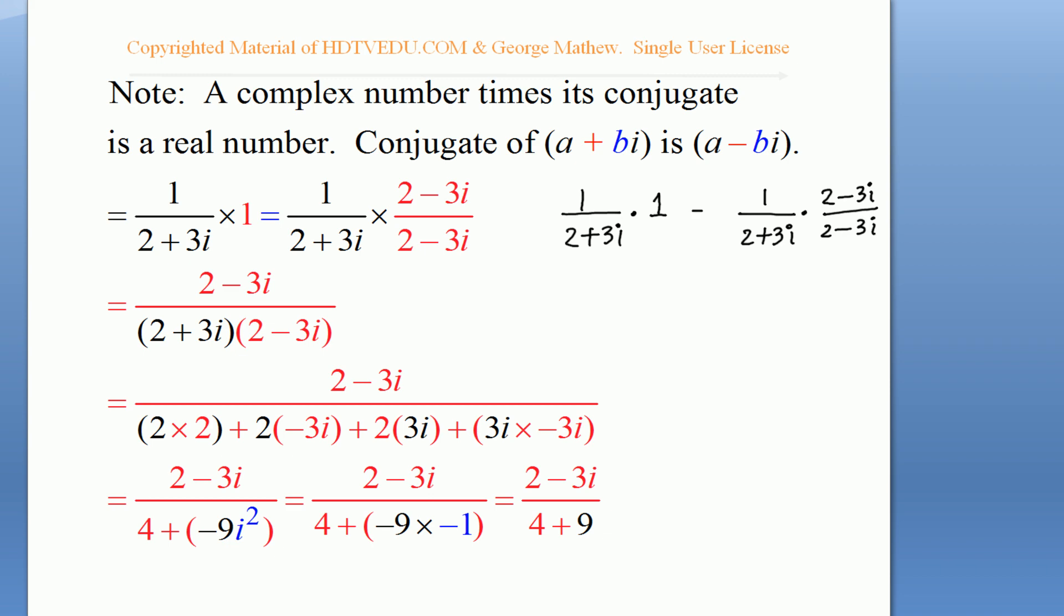And so, what do we get? This is as good as 1 times 2 minus 3i over 2 plus 3i times 2 minus 3i. And that is equal to 2 minus 3i divided by... If you know the result, go ahead and use it or just use the FOIL.